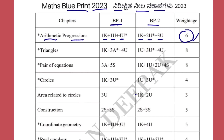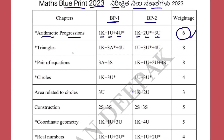In Triangles, you can get a total of eight marks — the highest chapter here. You will get a fixed four-mark theorem question, or sometimes the Pythagoras theorem for five marks. If it comes as five marks, then three application-based questions and three understanding-based questions you can expect.